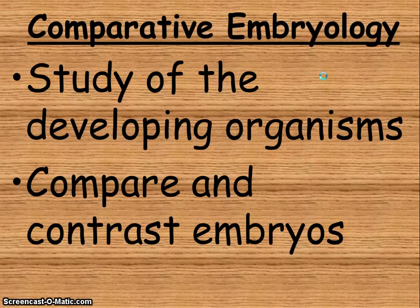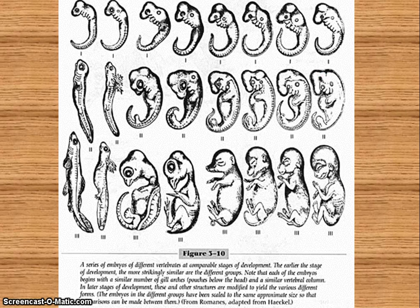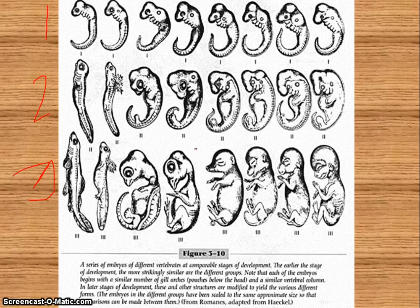The next thing we're going to talk about is comparative embryology — the study of developing organisms, comparing and contrasting embryos. It shows a number of relationships not obvious in the fully grown organism. The more alike the development of two organisms, the more closely related they are thought to be. You can see stage one, stage two, and stage three of development — a lot of them look very similar, and we're going to be doing an activity on this.